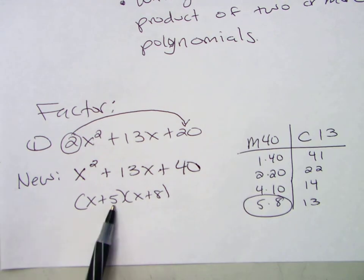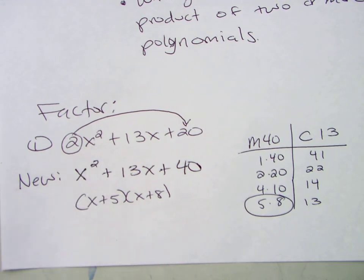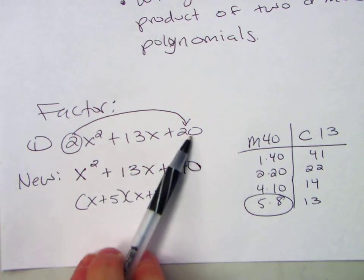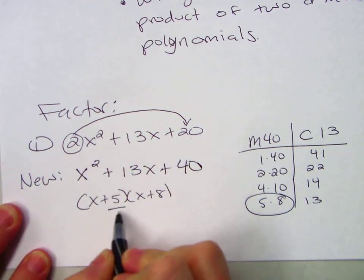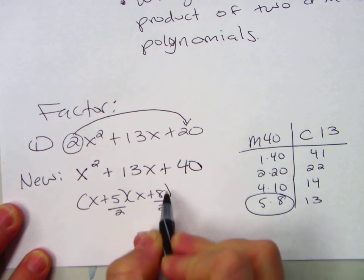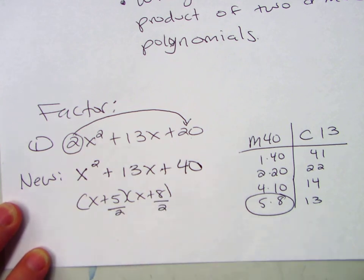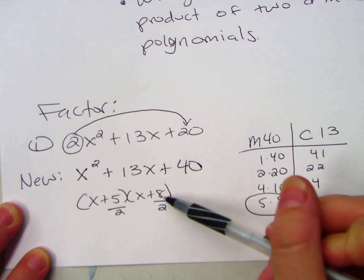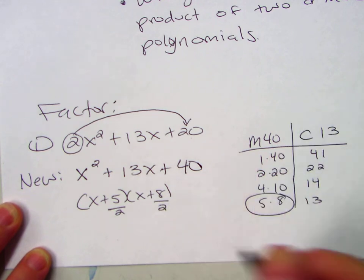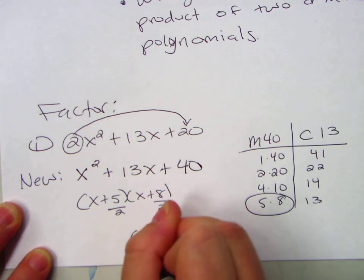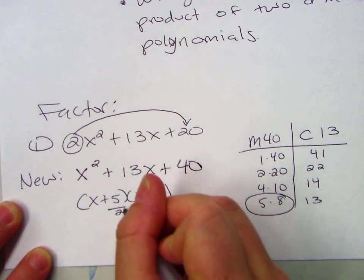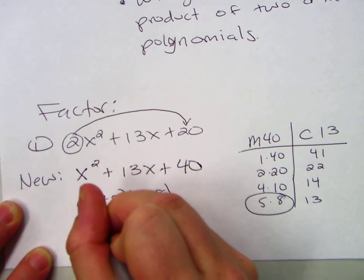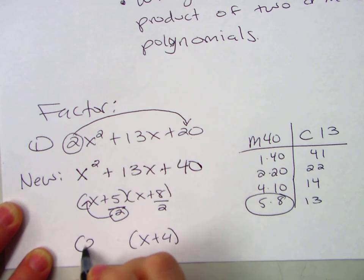If we double distribute, will we get this? No. So we slid that 2 to the side. So we have to do something with that 2 now. What we're going to do is we're going to write it under both the numbers. One of them is going to simplify. Which one of these simplifies? 8 over 2. What's 8 divided by 2? 4. So we get x plus 4. Now since this one doesn't divide, we're going to take that 2 and we're going to slide it to the front. And you get 2x plus 5. And you're done. That's it.